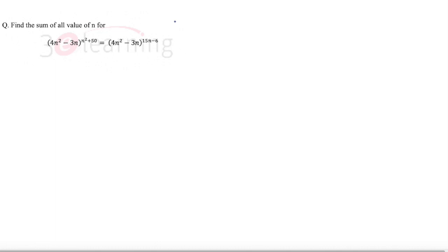Hello friends, welcome again to the world of maths by Amyay. I want you to please solve this question which is in front of you: find the sum of all values of n for (4n² - 3n)^(n²+50) = (4n² - 3n)^(50n-6). Please pause this video and try to solve this question.